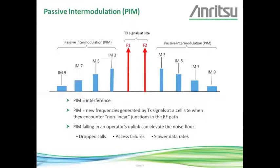Starting with what is passive intermodulation: PIM is interference — new frequencies generated by the transmit signals at a cell site when they encounter nonlinear junctions in the RF path. The two red lines represent the transmit signals; the blue lines represent the intermodulation products created when those signals mix at nonlinear junctions. The problem is that if the intermodulation products fall in the operator's uplink band, it can elevate the noise floor, causing higher drop calls, higher access failure rates, and slower data rates.